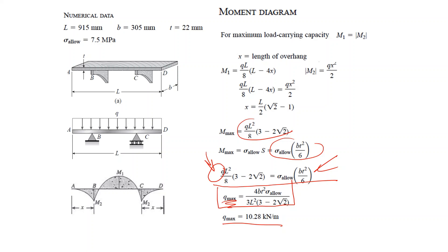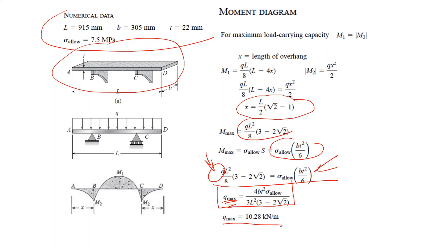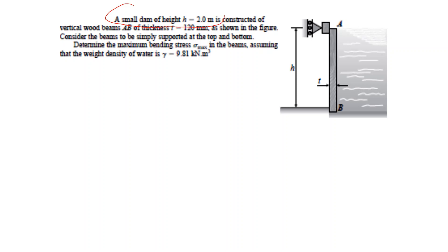From the numerical data, you find that q_max equals 10.28. So the answer is: for maximum load carrying capacity, place the brackets at this optimal position, and for this material the allowed distributed load can be a maximum of 10.28 kilonewtons per meter.